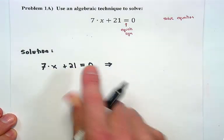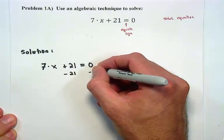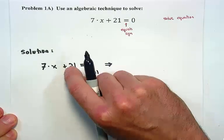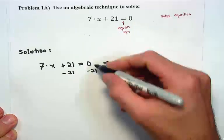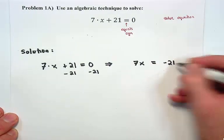We begin by bringing the 21 over to the other side. In other words, the inverse of addition is subtraction. Zero minus 21 is, of course, negative 21.